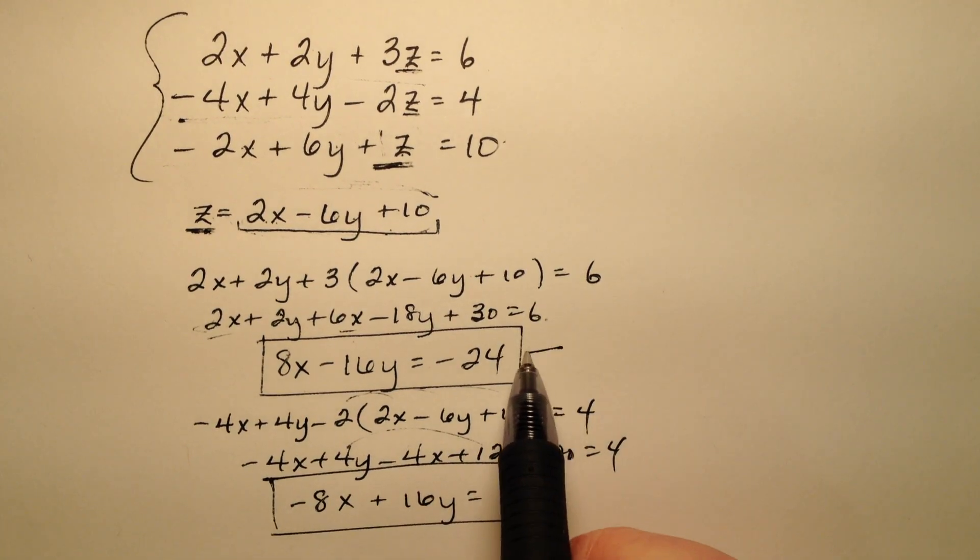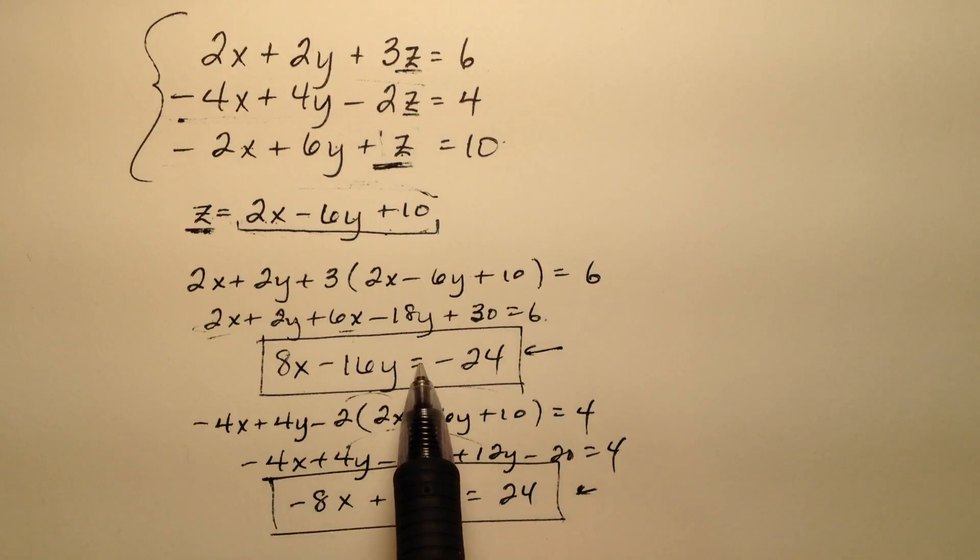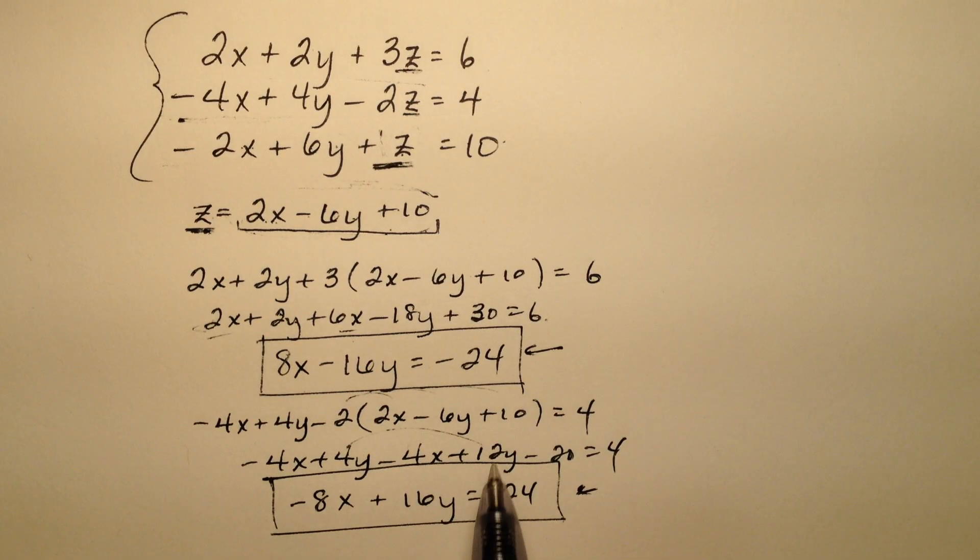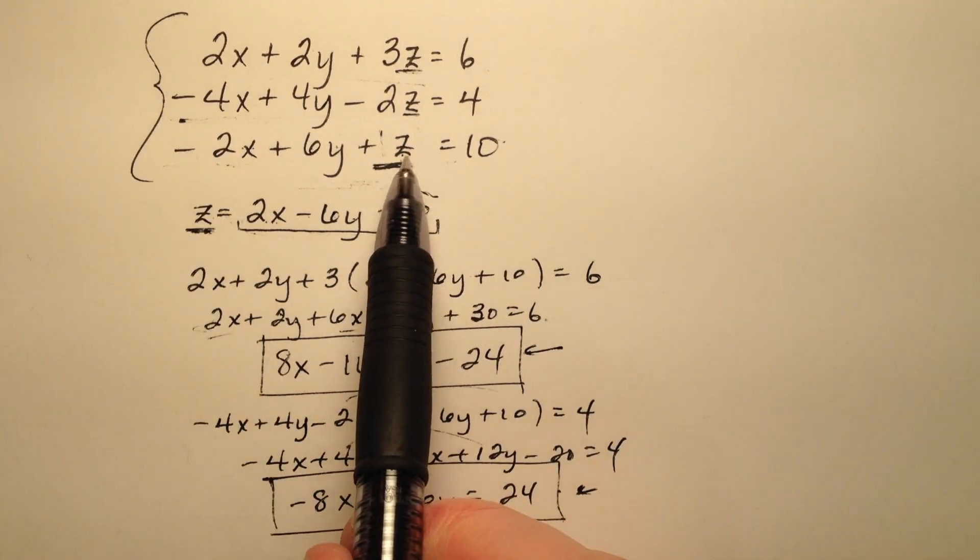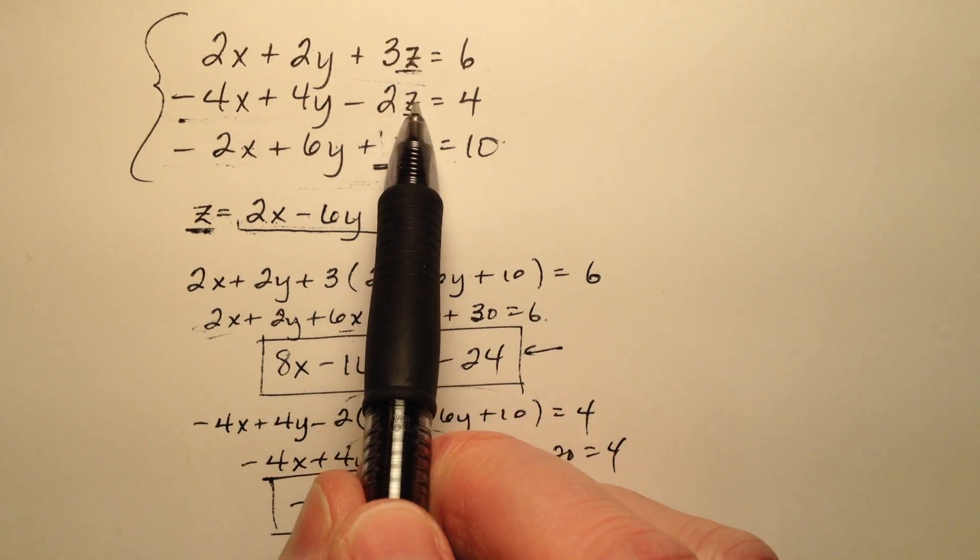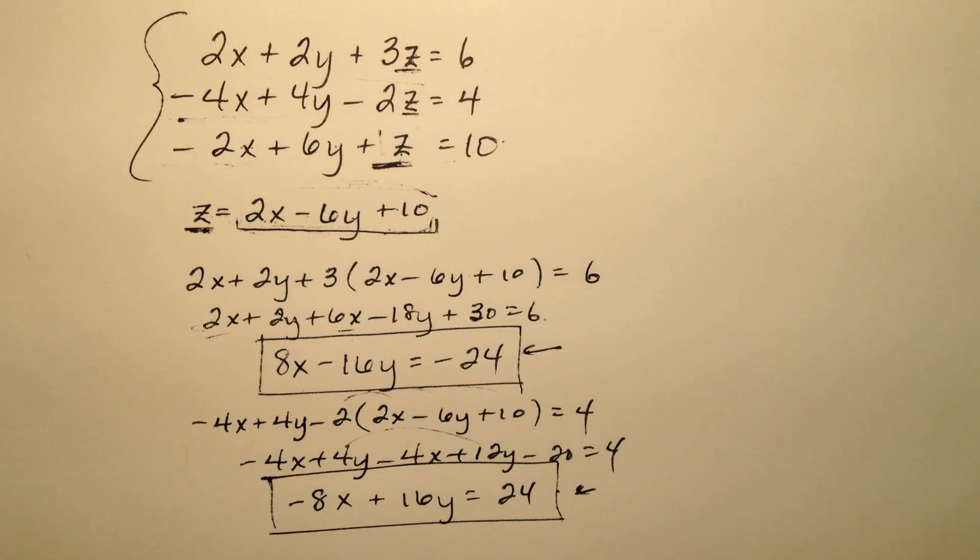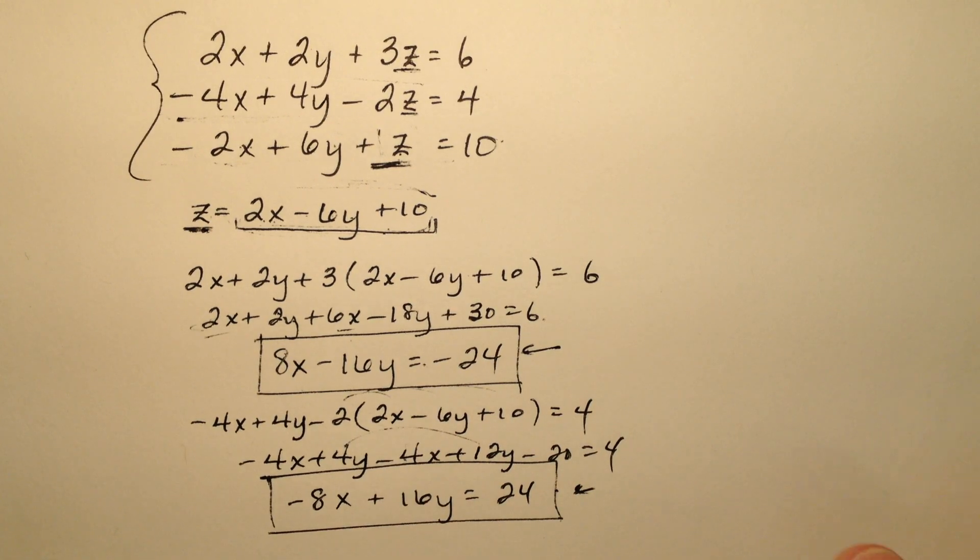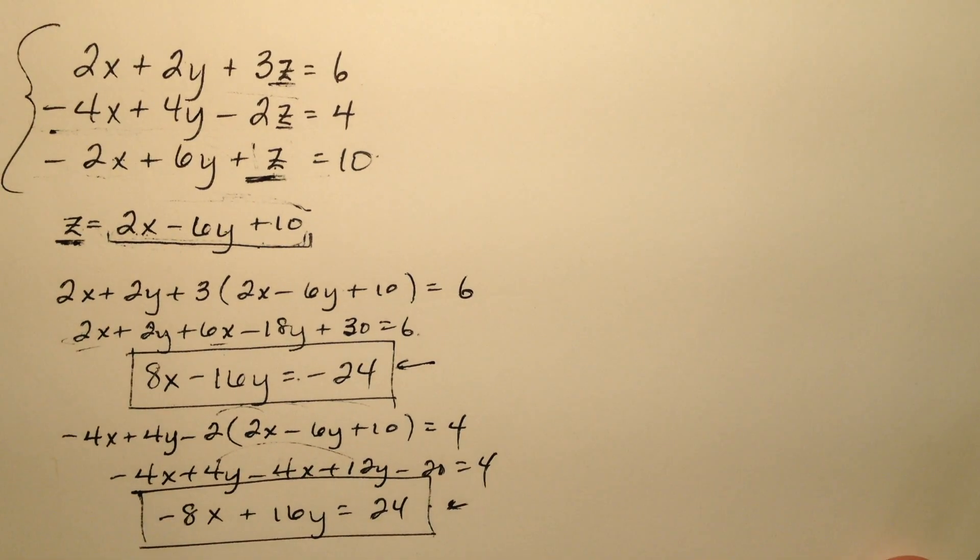So now I have these two equations that make a system on their own, two equations and two unknowns. I got these two equations by using the third equation, solving for z, and then plugging in this expression for z in the other two equations. So let's stack these two equations next to each other.